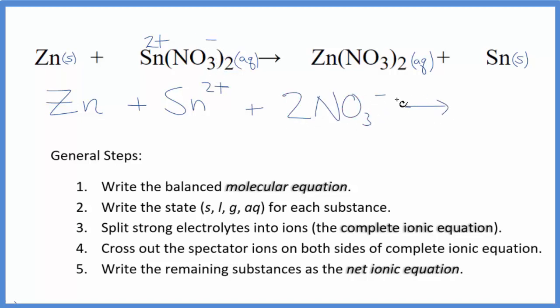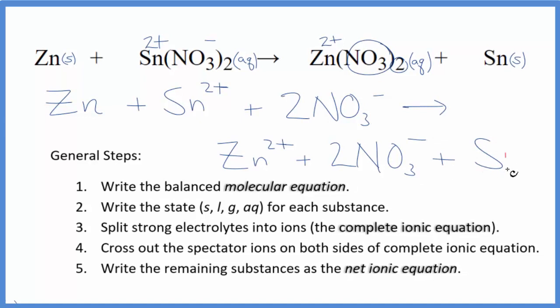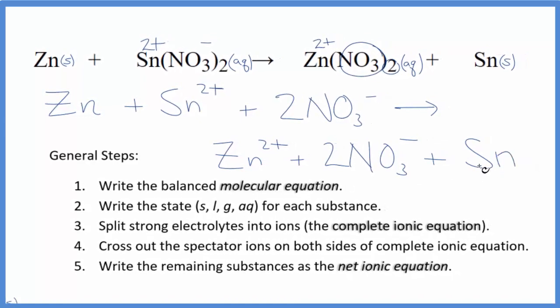For the products, again, we have this nitrate. We have two of them. So that Zn, that's two plus. In fact, it's always two plus. So we have the zinc ion. We have the two nitrates, two nitrates here. And then we have the tin metal, the Sn. So this is the complete ionic equation.